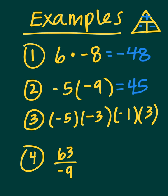For number three, we're going to work left to right. We have negative five times negative three — two negatives leaves you with a positive — so that gives you fifteen, times negative one, times three. Positive fifteen times negative one: a positive times a negative gives you a negative, so that's negative fifteen.